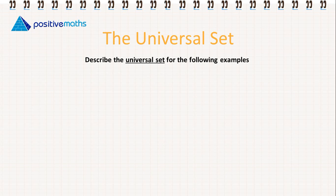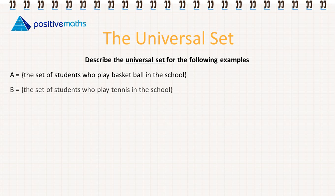So now we're going to describe the universal set for the following examples. We have set A: the set of students who play basketball in the school. B: the set of students who play tennis in the school. So our universal set, this is going to be the set of all students in the school.